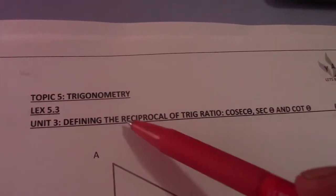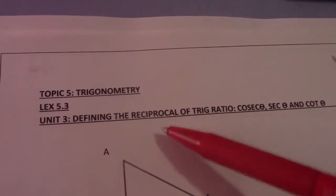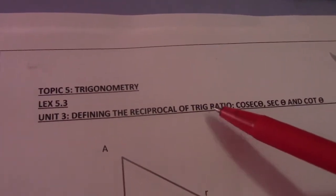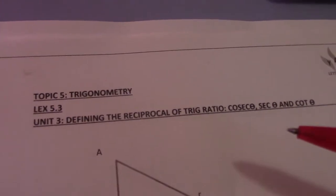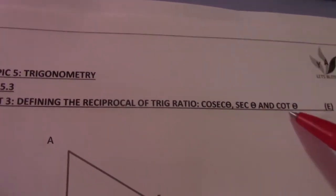Good day and welcome to learning exercise 5.3. Now we are defining the reciprocals of our trig ratios, meaning sin, cos and tan have reciprocals which are called cosec theta, sec and cot theta.